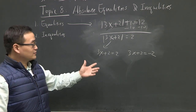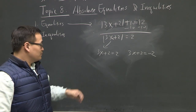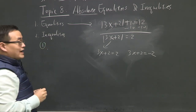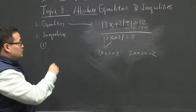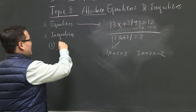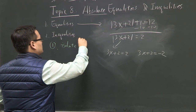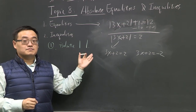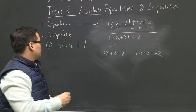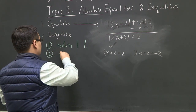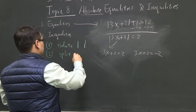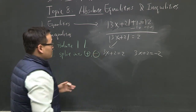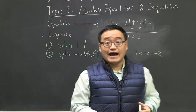So what are really the steps? There are only two steps. One: isolate the absolute value by itself. Two: split into positive and negative. That's all you have to do — split into positive 2 and negative 2. That's it.